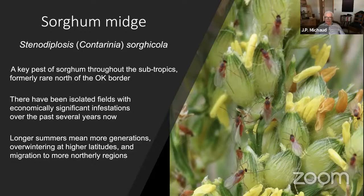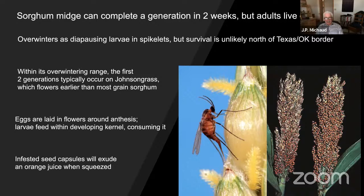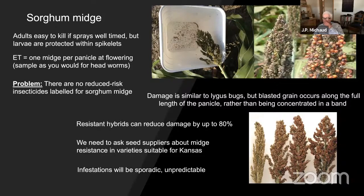Sorghum midge overwinters as diapausing larvae in spikelets, usually spikelets of Johnsongrass, which is an important alternative host. You can scout by squeezing seed capsules — if infested, you'll get bright orange juice exuding from them. Unfortunately, at that point you're going to be too late to spray. Each individual kernel is consumed by a developing larva. You can see the female laying her egg right into the top of the developing seed capsule. You have to scout the field during anthesis and before much of the grain has started to fill. You can do this the same as you would for headworms — by beating heads into a white bucket — and you're looking for adult midges. The problem is they're very small and almost the same color as the sorghum anthers.